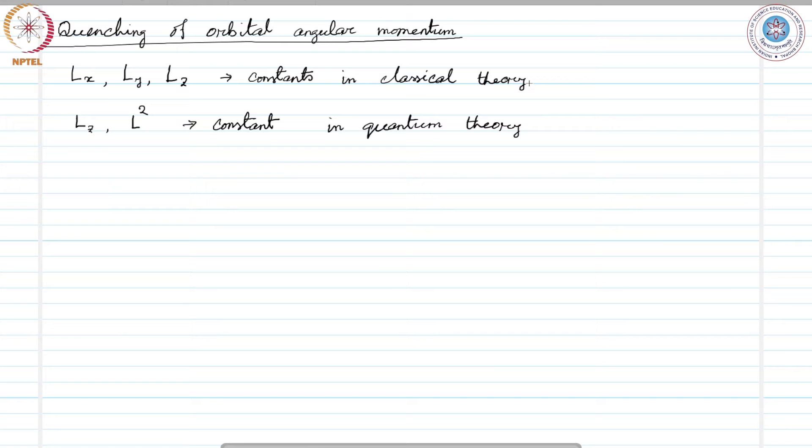If we consider a non-central field, the plane of the orbit will move around; the angular momentum components are no longer constant and may average out to zero.